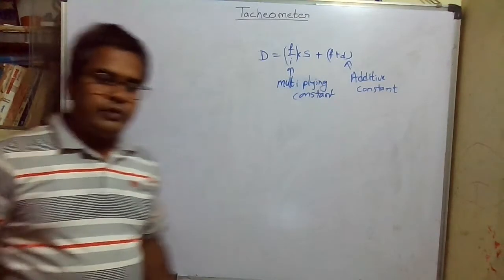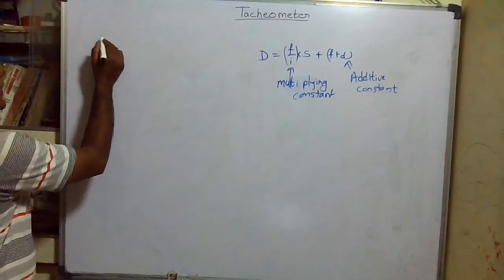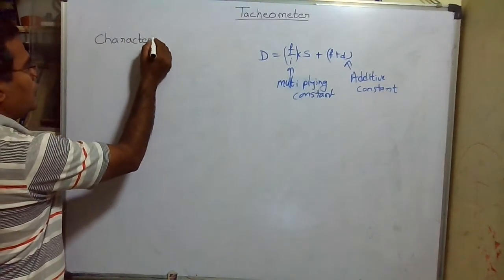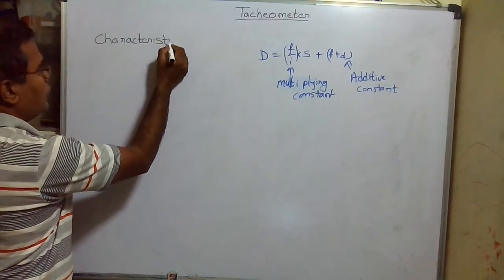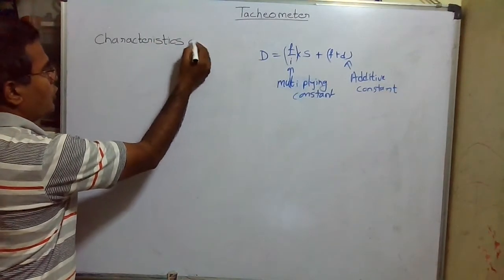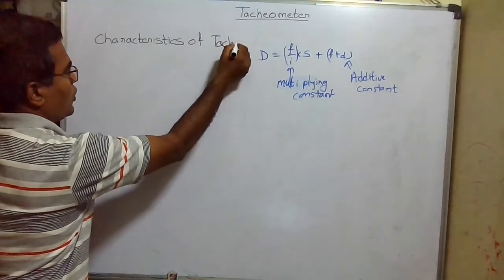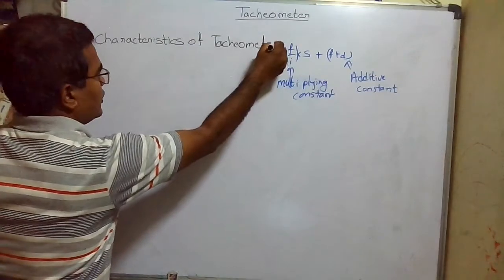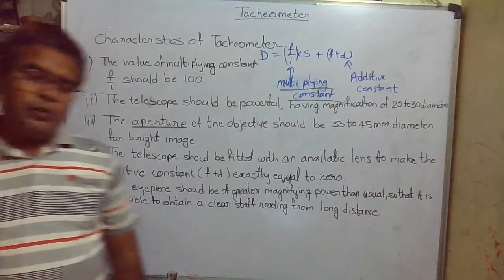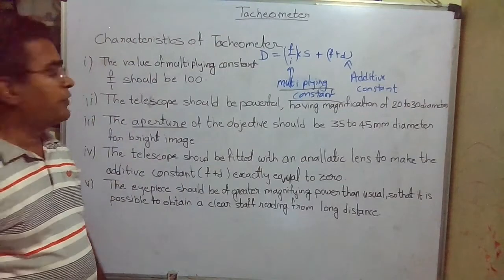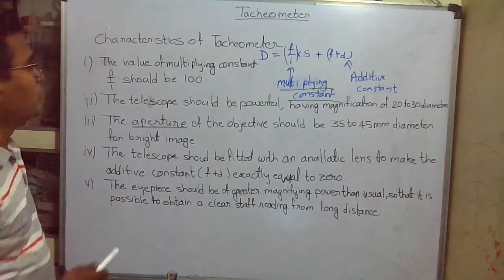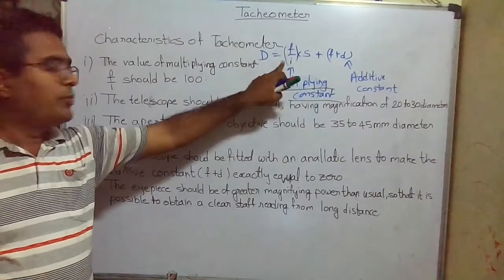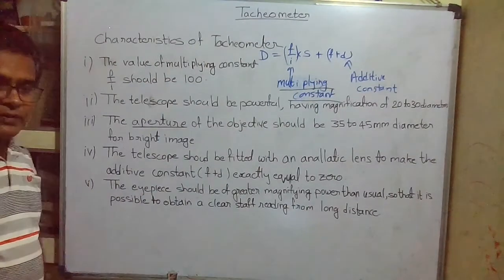Now we are going to see the characteristics of a tachometer. The very first characteristic is that the value of the multiplying constant f/i should be 100.